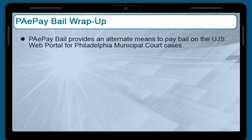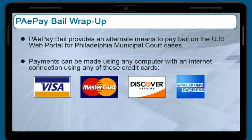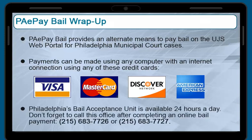PA ePay provides an alternate means to make bail payments for certain municipal court cases in Philadelphia. Bail ePayments can be made from any computer with an internet connection using Visa, MasterCard, Discover, American Express, or a debit card. Philadelphia County's Bail Acceptance Unit is available 24 hours a day. Don't forget to also call this number once you complete your PA ePay bail transaction.